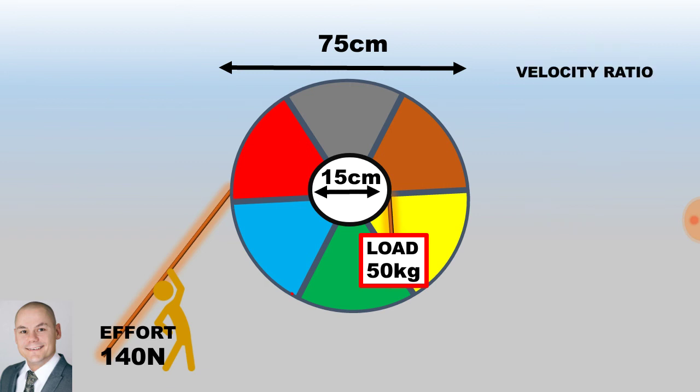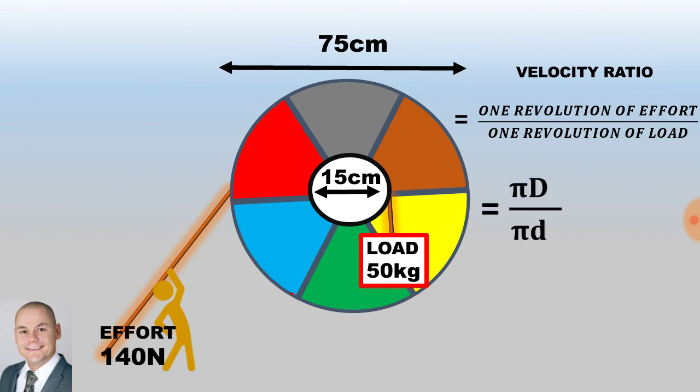To calculate the velocity ratio it will be one revolution of the effort over one revolution of the load. The calculation for the effort applied will be pi multiplied by the large diameter and for one revolution of the load it will be pi multiplied by the small diameter.